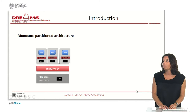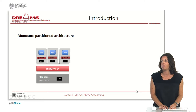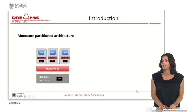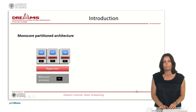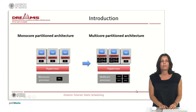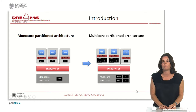In a monocore partitioned architecture we have typically three layers. The first layer is the computing platform, in this case with only one CPU. The second layer is the hypervisor, which is the element that achieves the temporal and spatial isolation between partitions. And the third layer is the partitions of the system.